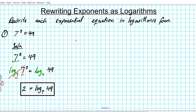Moving along, let's look at question 2. We have the exponential equation 9 raised to negative 2 equals 1 over 81. We are to rewrite this in its equivalent logarithmic form.